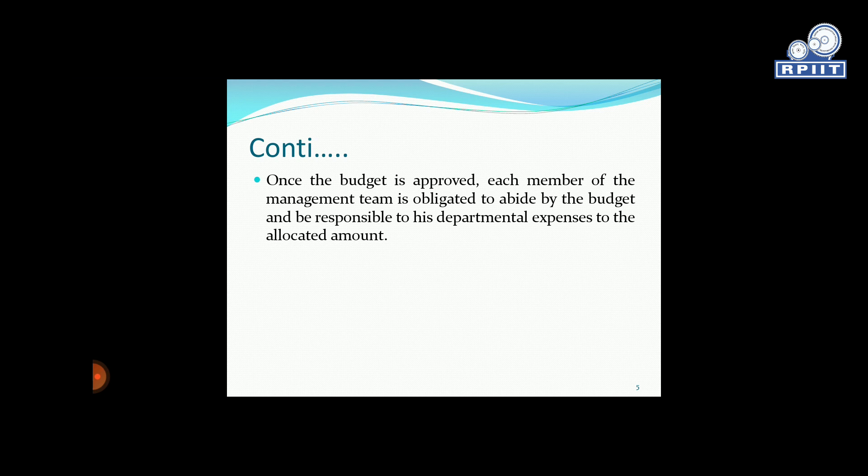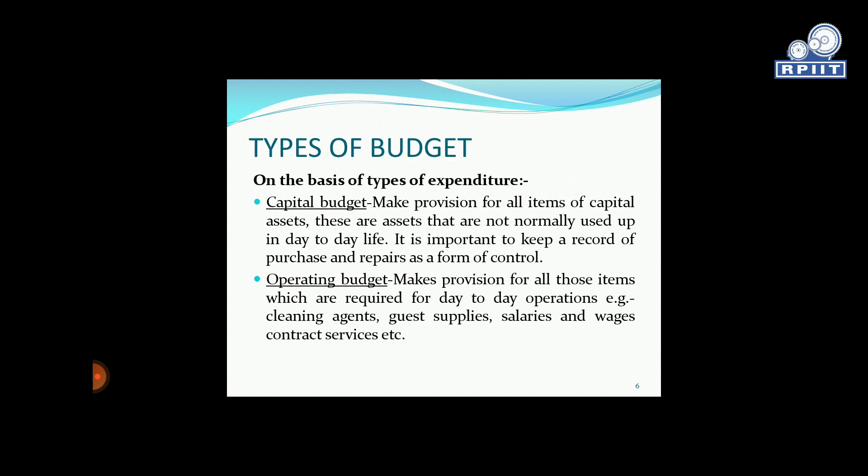Types of budget. On the basis of the type of expenditure, we have different types of budget. The first is capital budget and the second is operating budget. Capital budget makes provision for all the items of capital assets. These are assets that are not normally used up in day-to-day operations. It is important to keep a record of purchase and repair as a form of control.